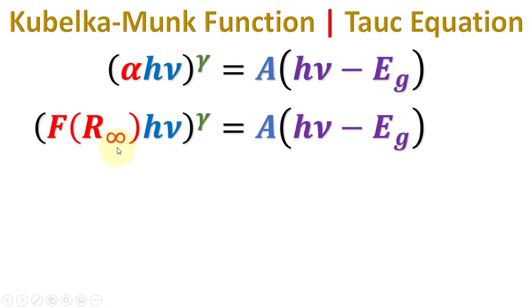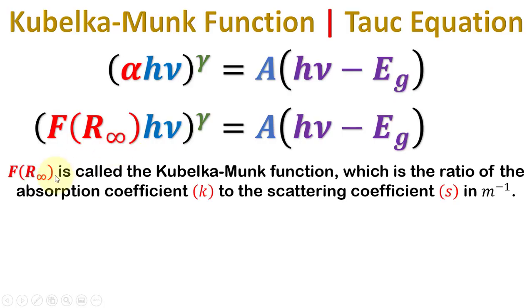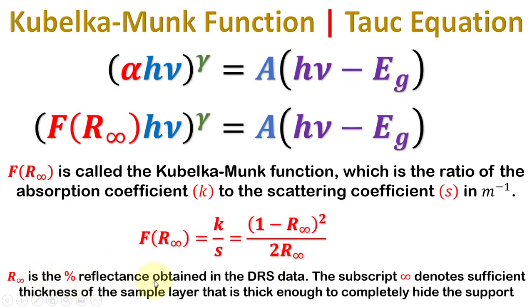F is called the Kubelka-Munk function, which is itself a ratio of the absorption coefficient k and the scattering coefficient s such that both are in meter inverse. That is, F equals k over s, where k equals (1-R)² and s equals 2R.